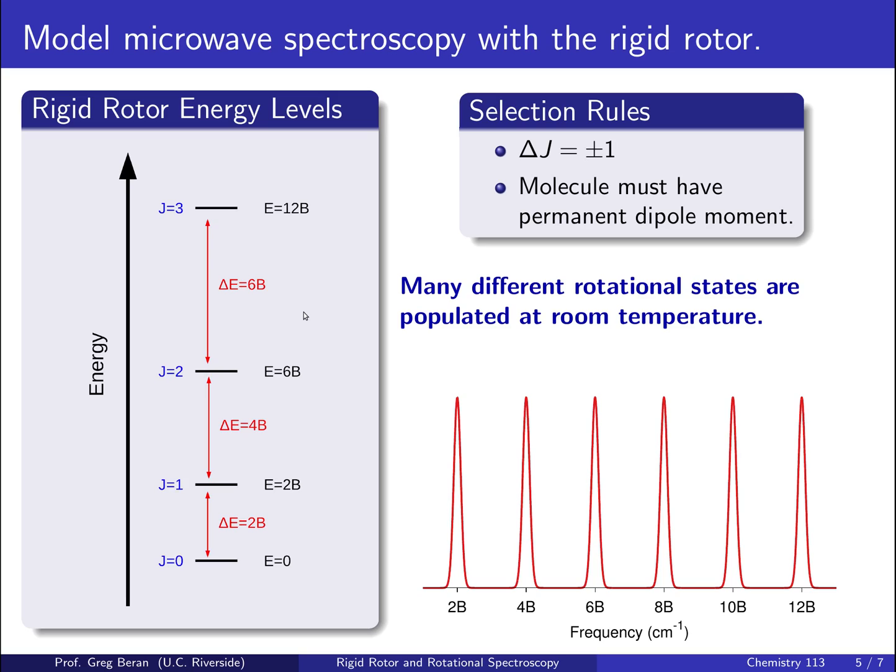It turns out that the energy levels for rotation are small relative to the amount of energy that's available at room temperature. So, what this means is that room temperature will typically have many different rotational states populated. And so, if we do a spectroscopy experiment, we can excite molecules from each of those different possible rotational states. So, we'll see quite a few different peaks in our spectrum.